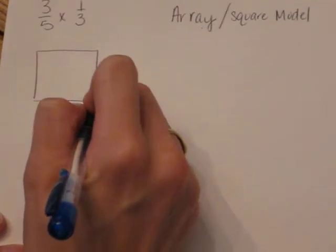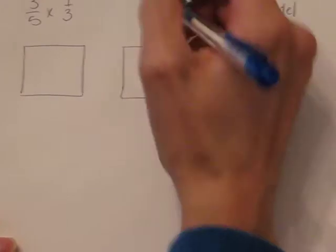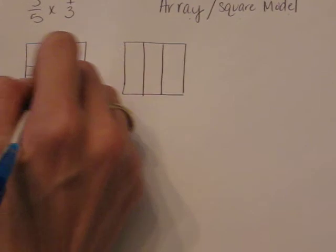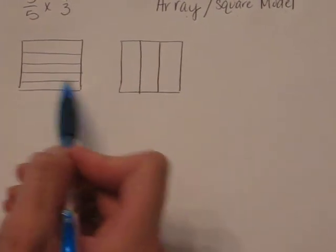The first thing that you want to do is you want to represent three-fifths and one-third using a pictorial method. You notice that I made my bars vertical and horizontal.